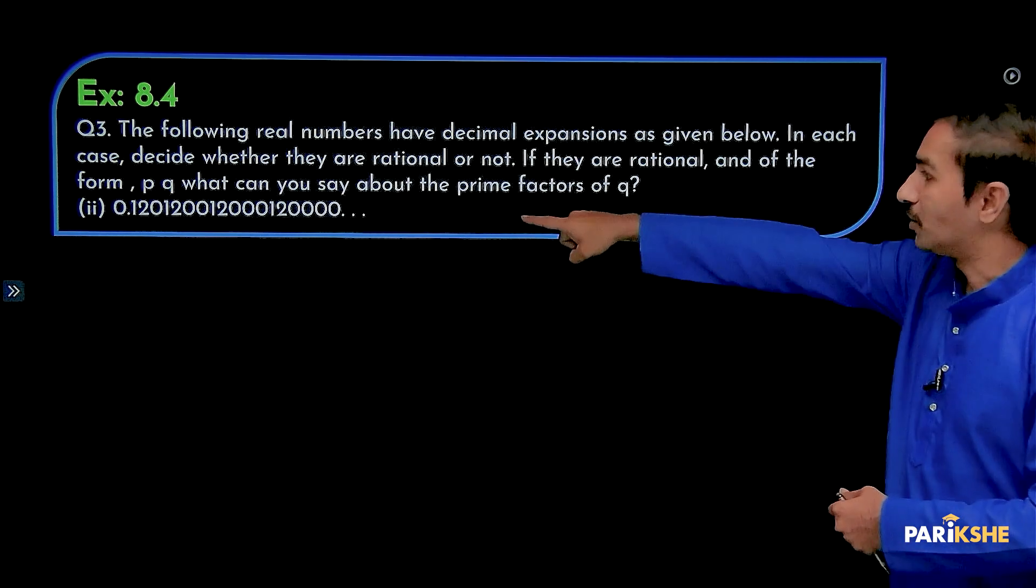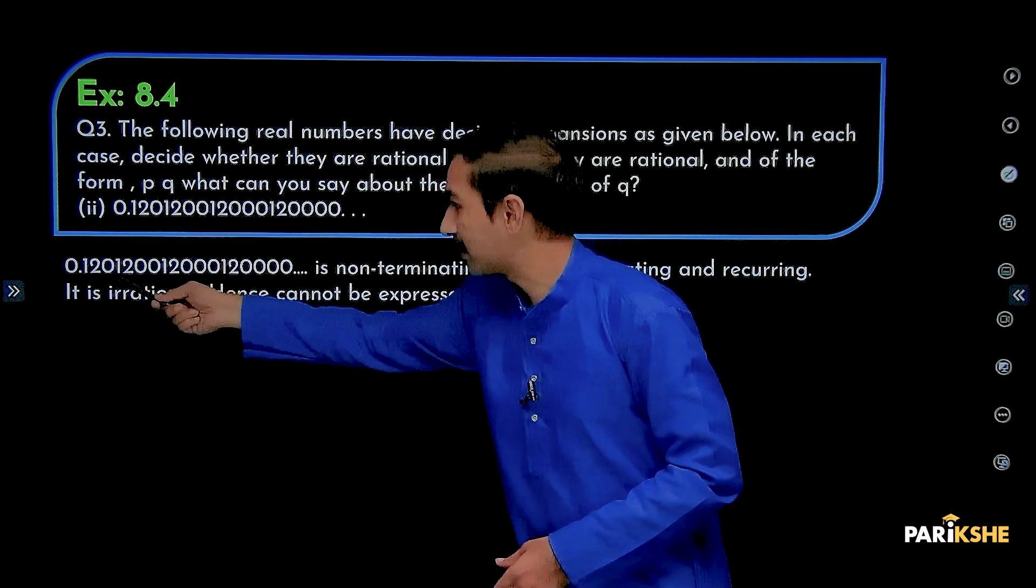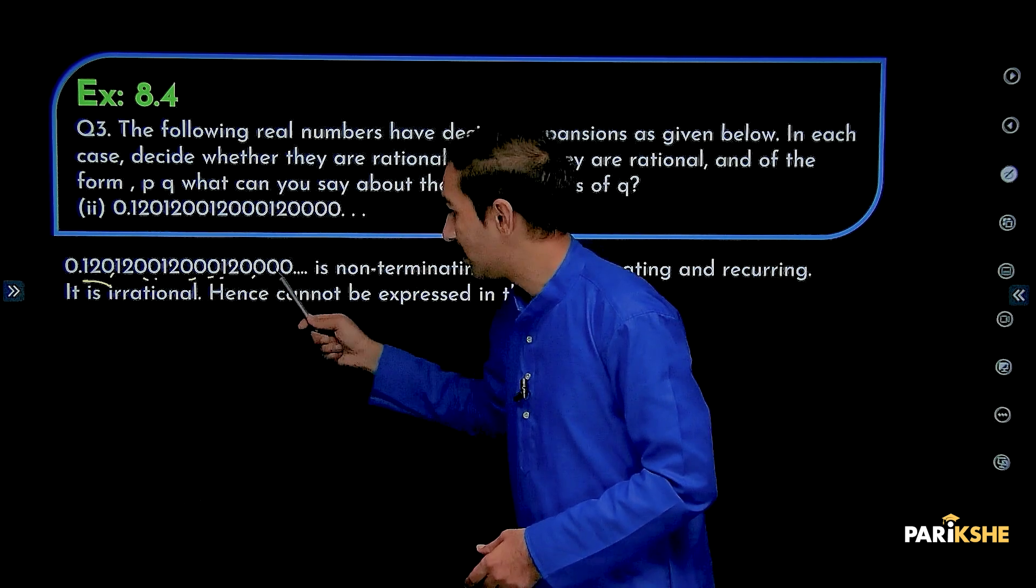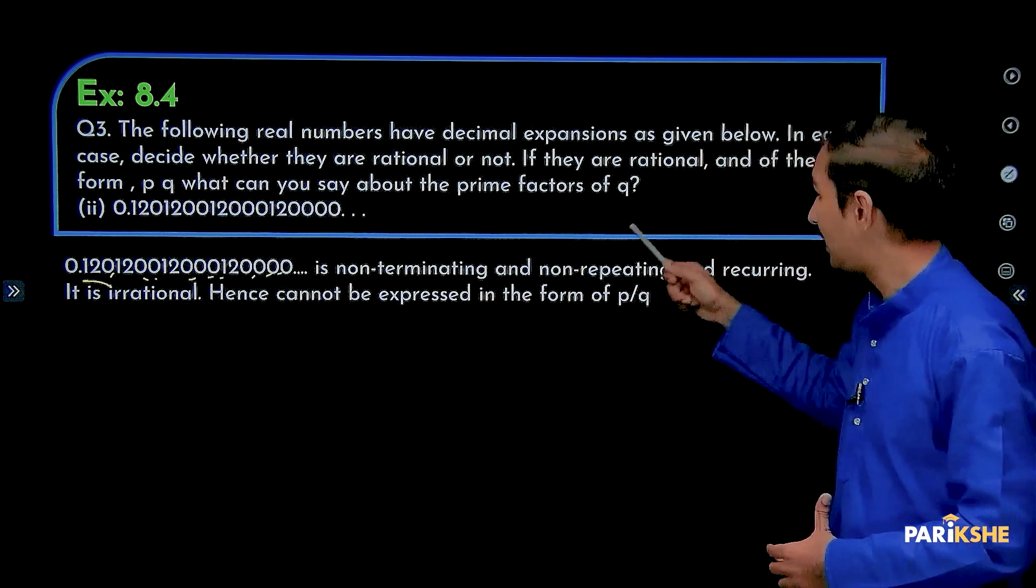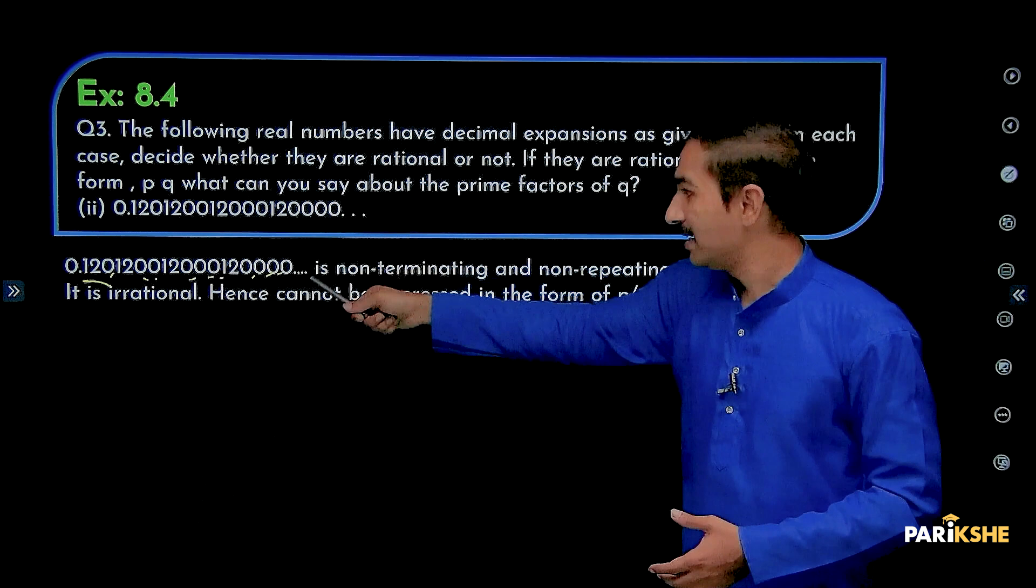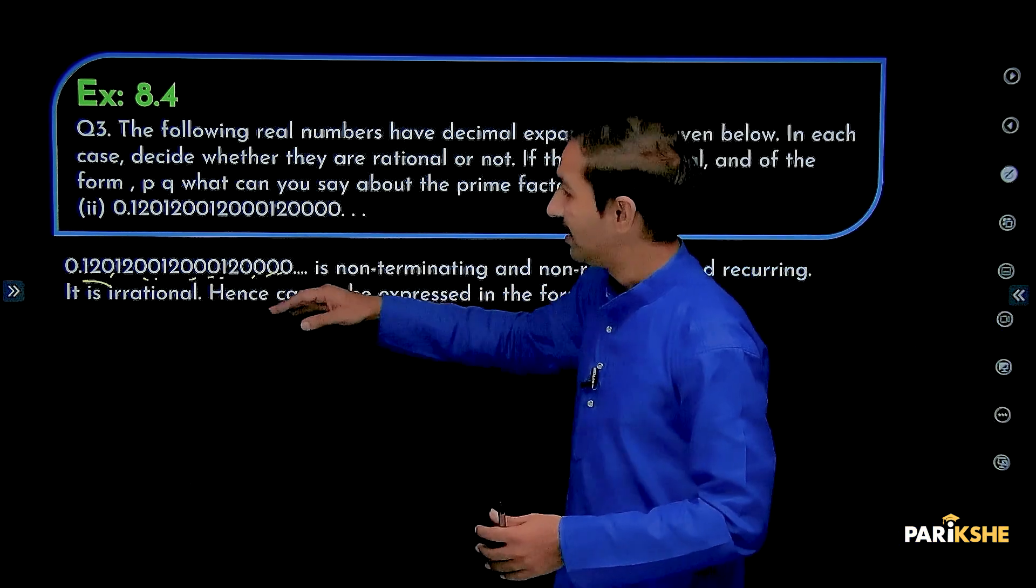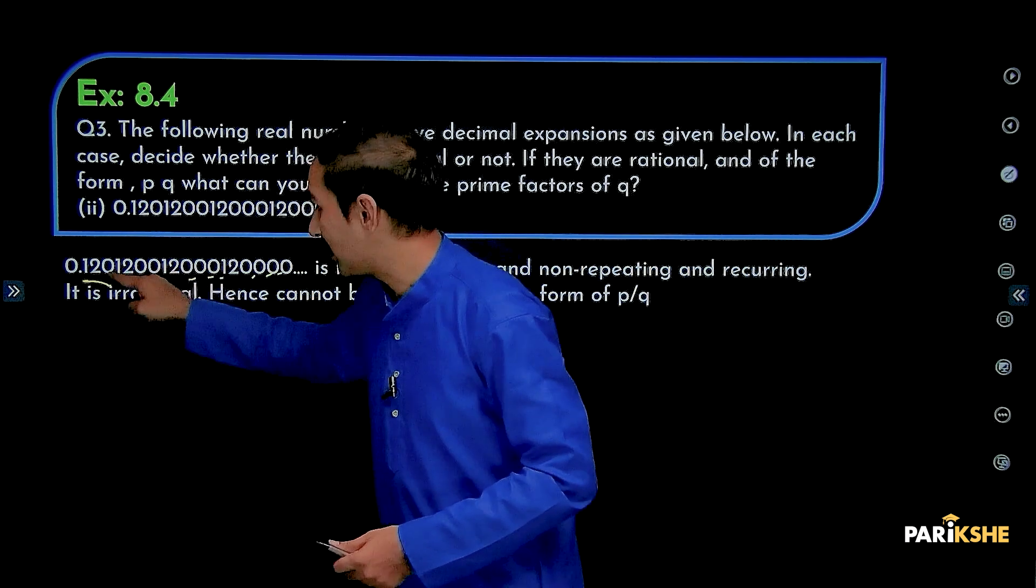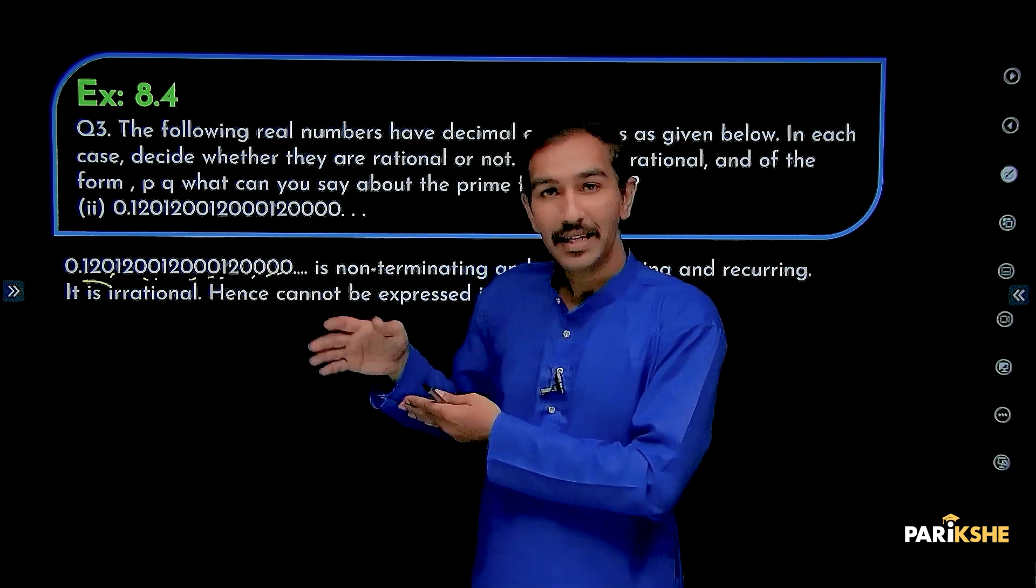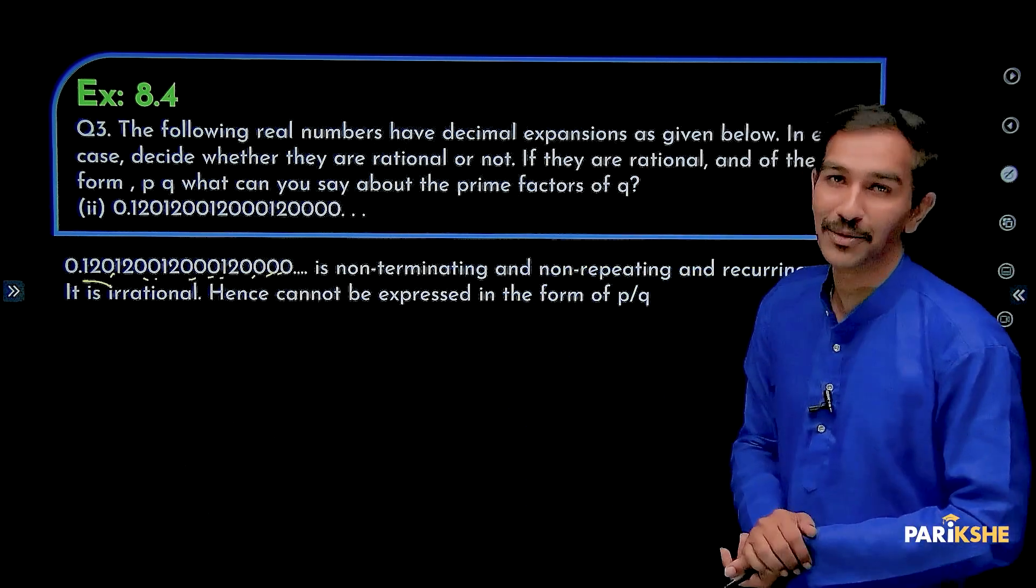Mundhin prashne. Idhu rational number haudha alva antha khehlta adhre. Thumbha straight forward answer. Illhi number repeat agathe la. 1 2 0, 1 de 0, ille erit 0, ille moor 0, ille 0, ille 0. Is a non-terminating and non-repeating, adhva non-recurring hint is irrational. Hence, cannot be expressed in the form of p by q. Ye nakta idhe ali? Repeat agathe la rigid so change agathe il, 1 0 idhe ali, erit 0 idhe, moor 0 idhe. Idhu non-terminating, repeating or recurring. Therefore, it is not a rational number and it cannot be expressed in the form of p by q.